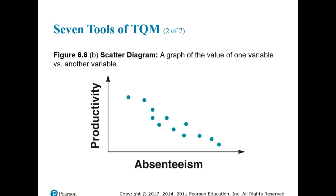Scatter diagrams show the relationship between two measurements — for example, a positive relationship between the length of a service call and the number of trips a repair person makes to a truck for parts, or a plot of productivity and absenteeism. If two items are closely related, the data points form a tight band; if a random pattern results, the items are unrelated.